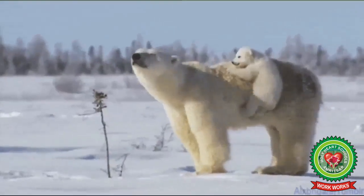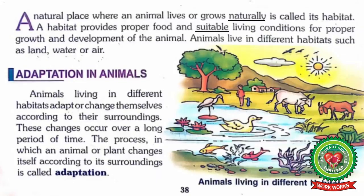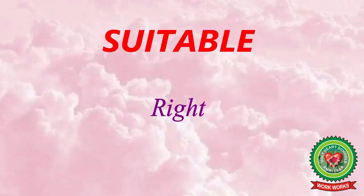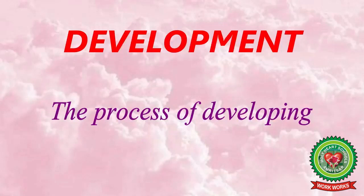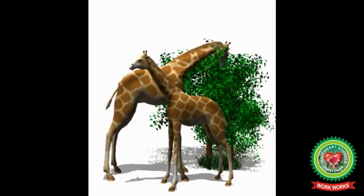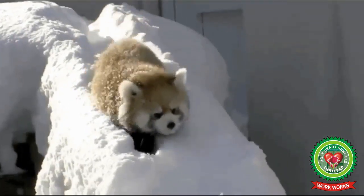A place where a living organism lives or grows is called its habitat. A habitat provides proper food and suitable living conditions for proper growth and development of the animal. Underline the word 'suitable' and write down its meaning. Also underline the word 'development' and write down its meaning: the process of developing.